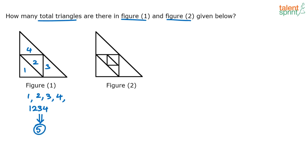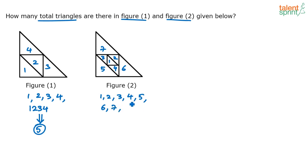For figure 2, numbering the parts 1, 2, 3, 4, 5, 6, 7 — each of those is a triangle. Then 1, 2, 3, 4 together is a triangle, and 1, 2, 3, 4, 5, 6, 7 together is a triangle. So total 9 triangles in figure 2.